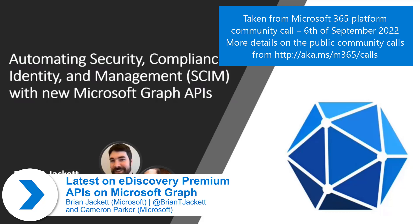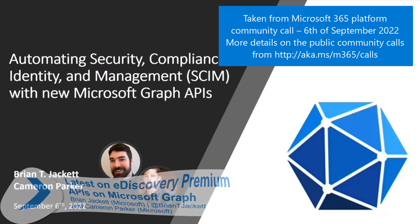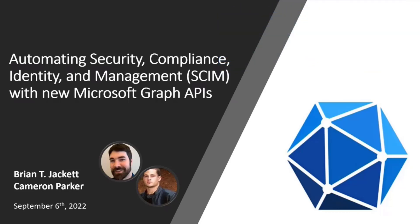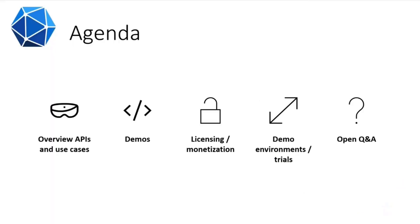These are specifically for the eDiscovery APIs. We'll talk about how you can automate this for some of the use cases, and then Cameron will walk us through some demos. We'll give a quick overview of the APIs themselves, go into some use cases, some demos, talk about some of the license implications, and how you can actually get a demo or trial environment. And if we have time at the end, we'll have a little Q&A.